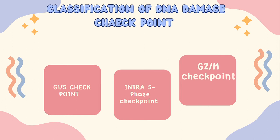Then there is the Intra-S Phase Checkpoint. This checkpoint stops the cell within S phase to check whether replication is being done correctly — that is, whether DNA is being properly replicated in a semi-conservative manner or not. This is what the Intra-S Phase Checkpoint monitors.